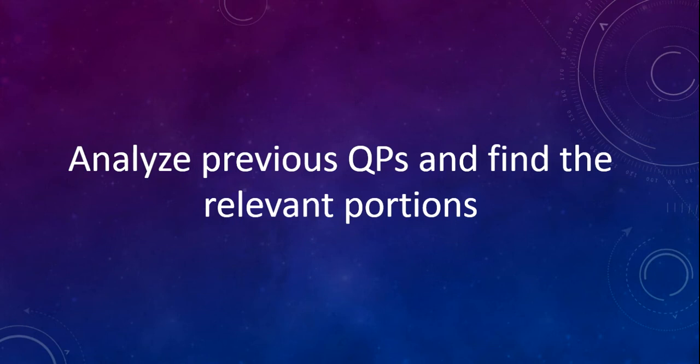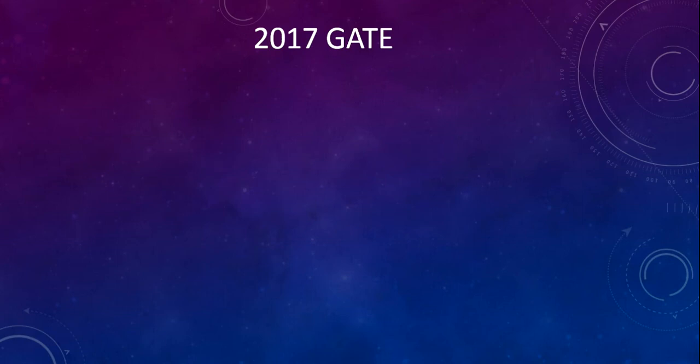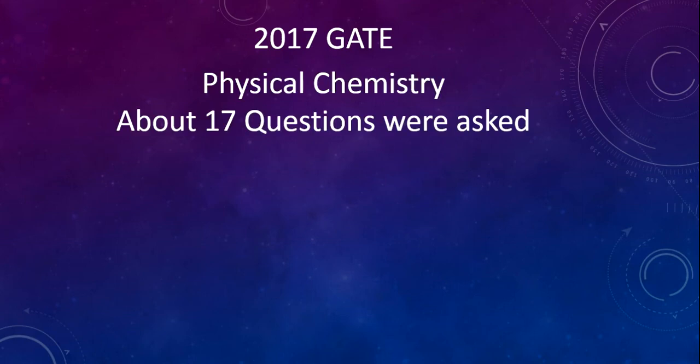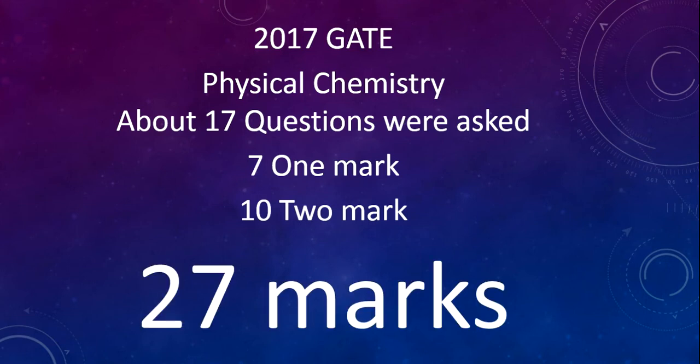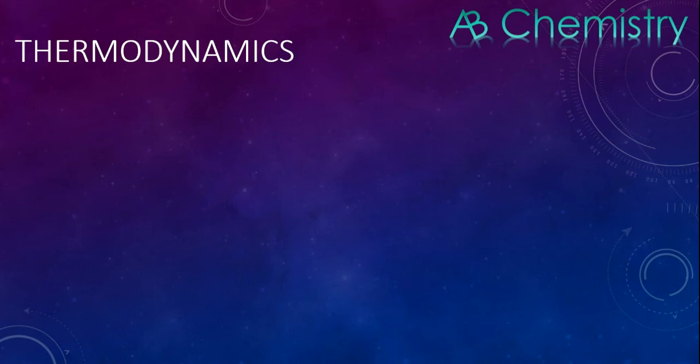They only ask on specified portions, and this syllabus is much lesser than that of the CSIR question paper. In 2017, the physical chemistry section had 17 questions: seven one-mark questions and ten two-mark questions, so in total there were 27 marks. Let us look at the important portions of physical chemistry.